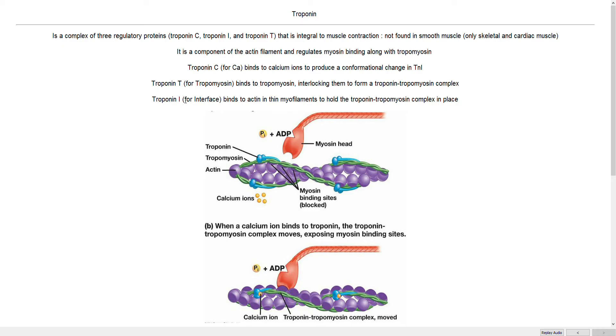Next we have troponin I. I, you can think of it as interface. So it's what's going to bind everything together, troponin T, C, and the actin filament. So it's kind of like the glue of this complex.